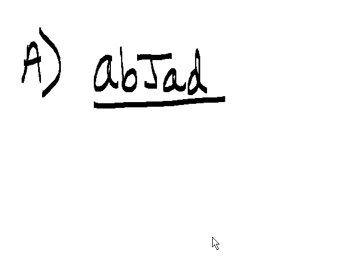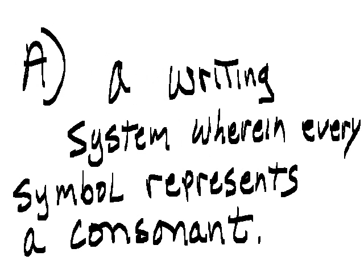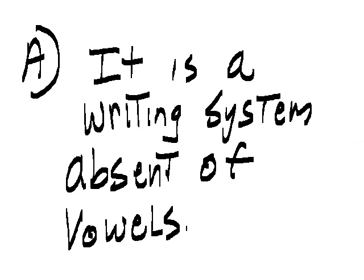Question: What is an abjad? Answer: A writing system wherein every symbol represents a consonant. It is a writing system absent of vowels.